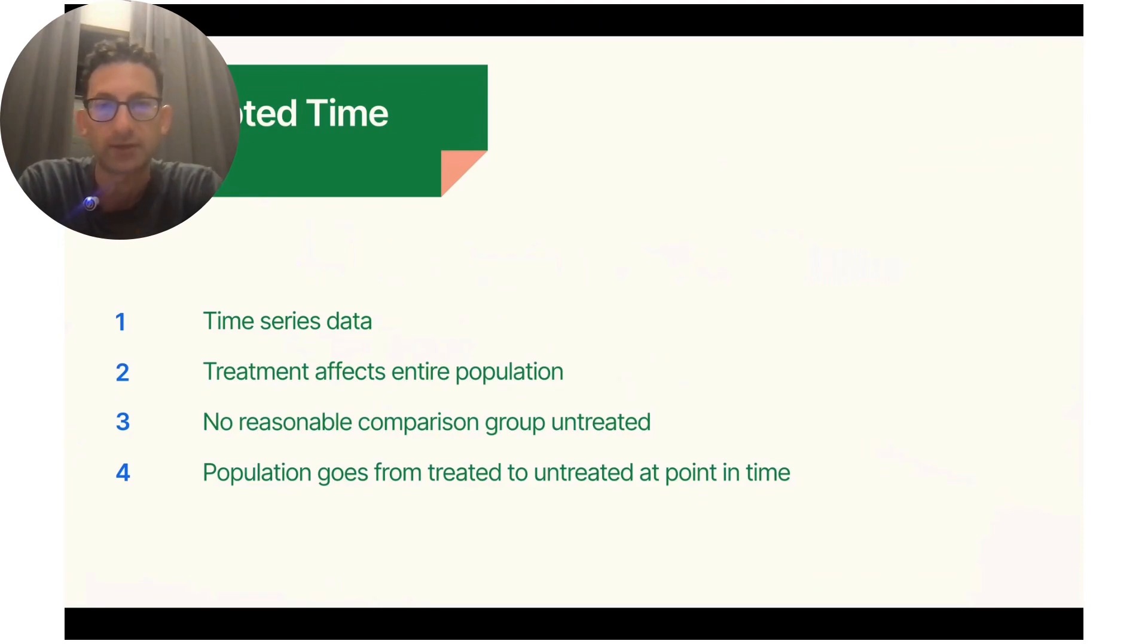First, you need time series data. The treatment in question, such as a feature launch or marketing campaign, has to affect the entire population, or at least there's no reasonable comparison group left untreated. And this population at some point goes from treated to untreated.